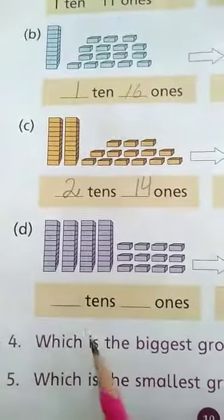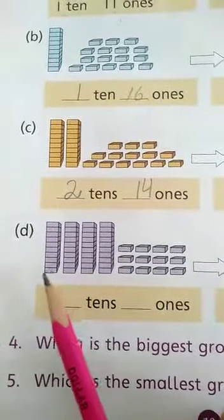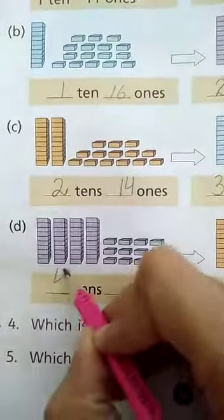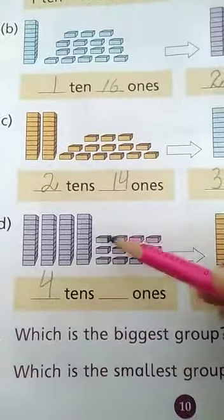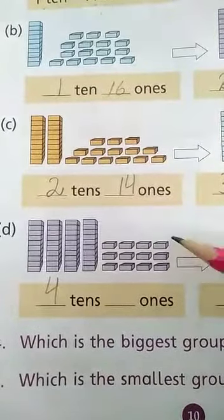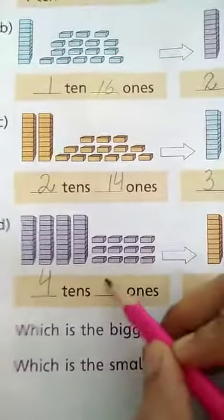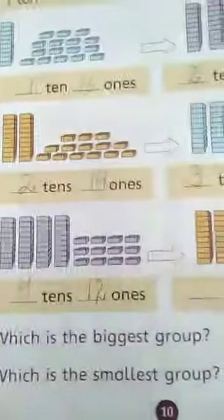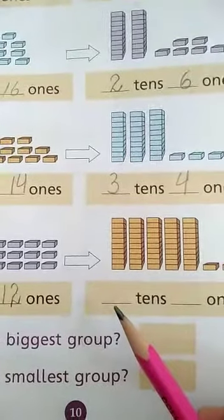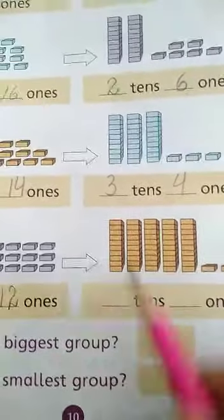On question number D, Adil has 1, 2, 3, 4... 4 tens and 1, 2, 3, 4, 5, 6, 7, 8, 9, 10, 11, 12.